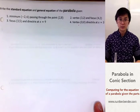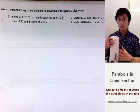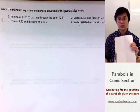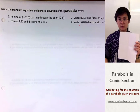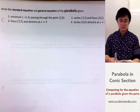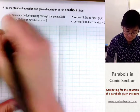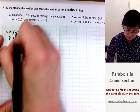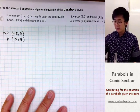For problem number 1, we need to find the standard and general equation of the parabola given the minimum point and a point passing through the parabola. It's easier to analyze conic section problems using a graphing paper, so we'll be using one for problems 1 through 4. The given information is: minimum point at negative 2 and 6, and passing through the point 2 and 8.